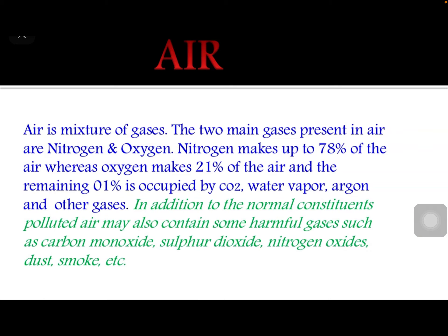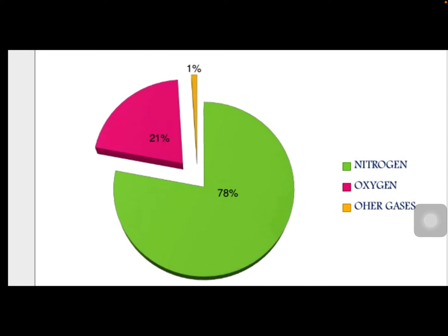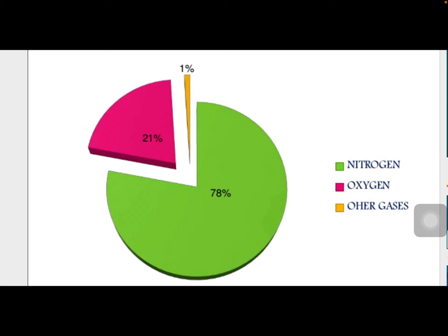The remaining 1% includes carbon dioxide, water vapor, argon, and other gases. Here is a diagram showing the components of air — the green portion represents nitrogen at 78%, the pink portion is oxygen at 21%, and the remaining 1% is other gases.